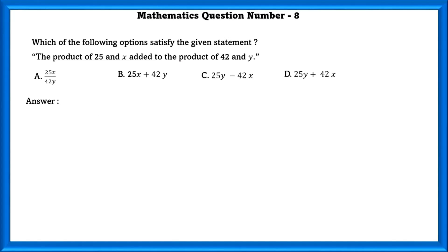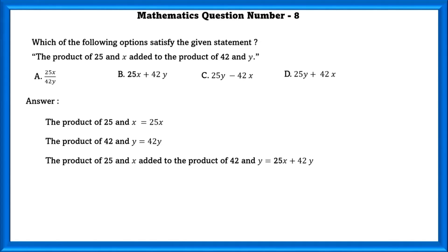Mathematics question number 8. Which of the following options satisfies the given statement? The product of 25 and x added to the product of 42 and y. The product of 25 and x is equal to 25x, while the product of 42 and y is equal to 42y. So, the product of 25 and x added to the product of 42 and y is equal to 25x plus 42y.